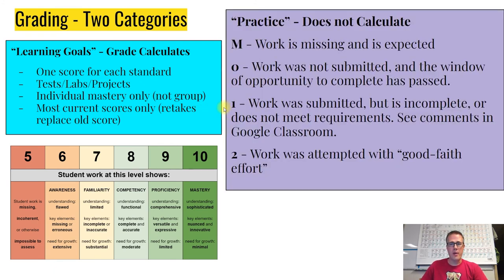The other category is Practice, which does not calculate toward your score. You'll see one of four scores: M means the work is missing and I'm still expecting it. Zero means it wasn't submitted and the opportunity has passed. One means something was turned in but is missing, incomplete, or didn't meet requirements—check Google Classroom for feedback on what needs to be done. Two is what you're shooting for—work turned in and done correctly. Good job.